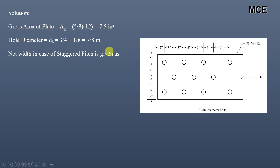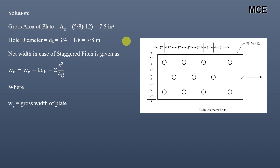The net width for a staggered pitch is given as: W_N = W_G − ΣD_H + Σ(S² / 4G), where W_G is the gross width of the plate, S is the staggered pitch, and G is the gauge or transverse distance.